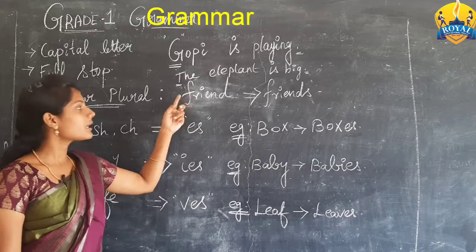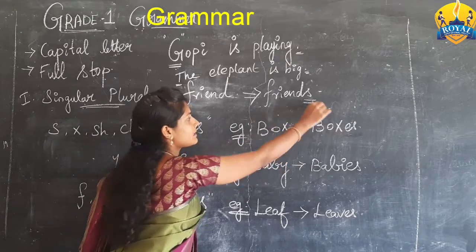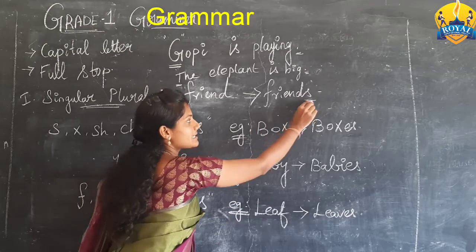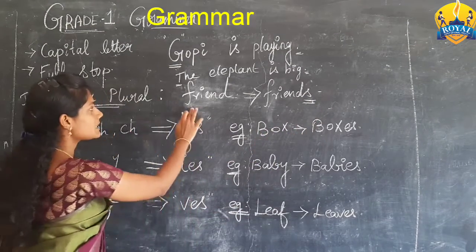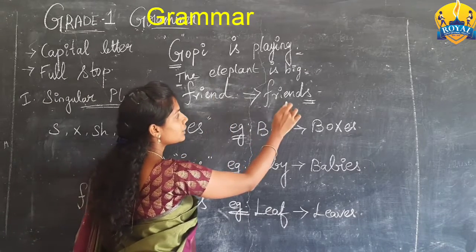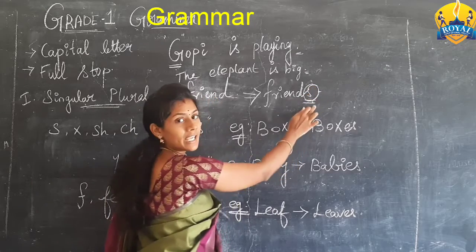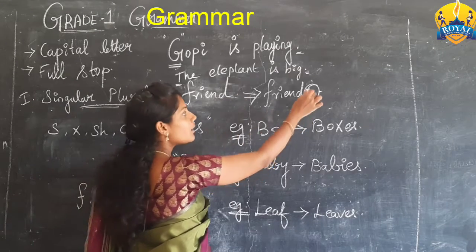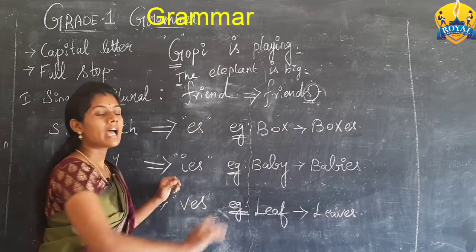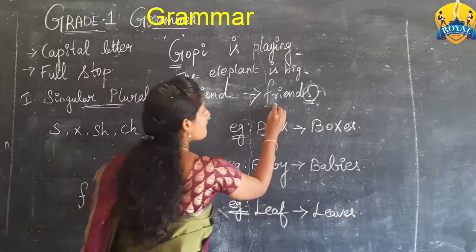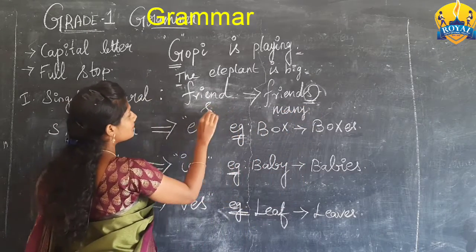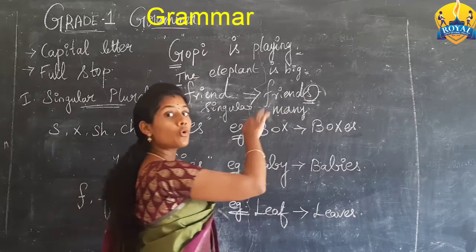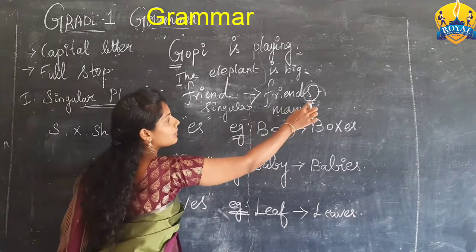The singular word changes into the plural word by adding S at the end of the word. For example, 'friend' is a singular word. When we add S, it becomes 'friends,' which is the plural form — that means more than one, and that is named as plural.